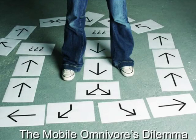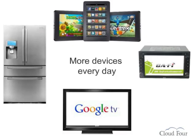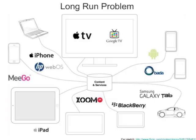We've got a fair amount of material to go through, so we're just going to dive right in. The problem, as everybody knows, is that there are more and more devices every day. This has been called the zombie apocalypse of devices — televisions, cars, stereos, refrigerators, everything. The short-run problem is how we deal with mobile phones, but the long-run problem is how we get our content and services delivered to all these different devices, now and in the future.